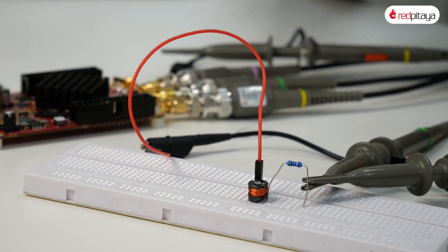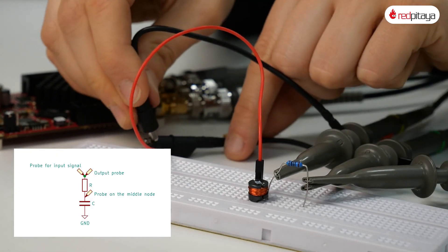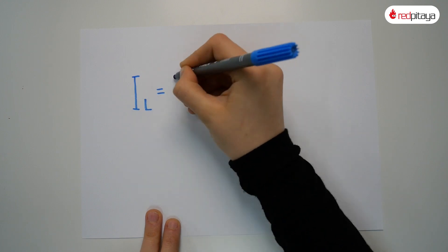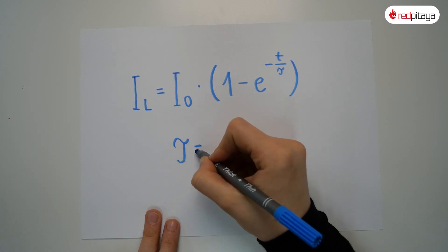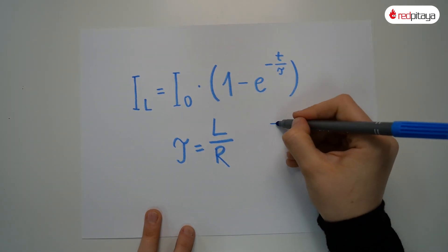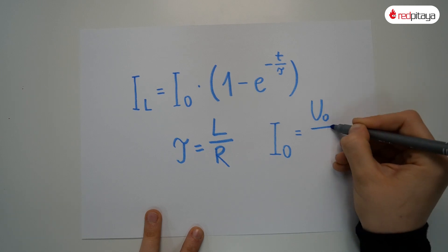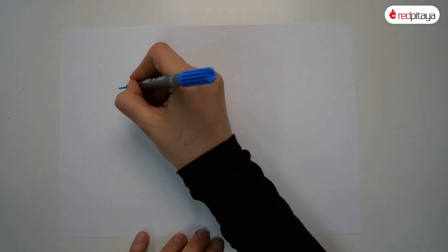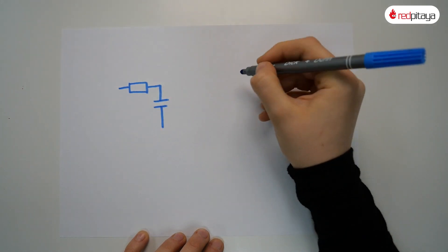Done thinking? Good. Let's write them down. Tau is a bit different this time and equals inductance over resistance. The nominal value of the current equals V₀ over resistance. For simplicity's sake, the rest of the video will revolve around RC circuits — consider RL circuits your optional homework.